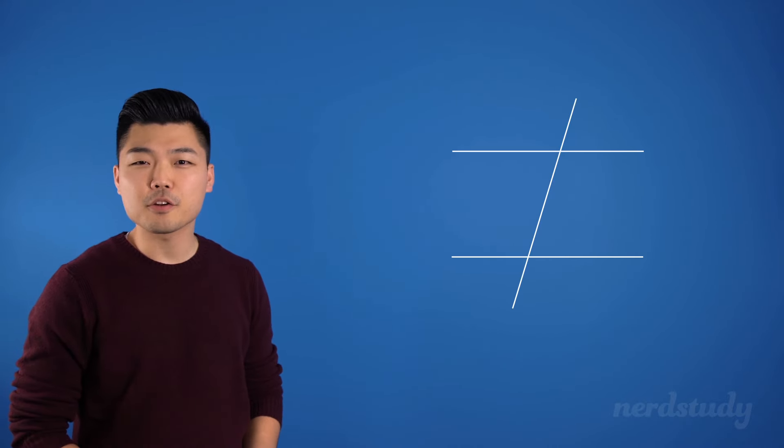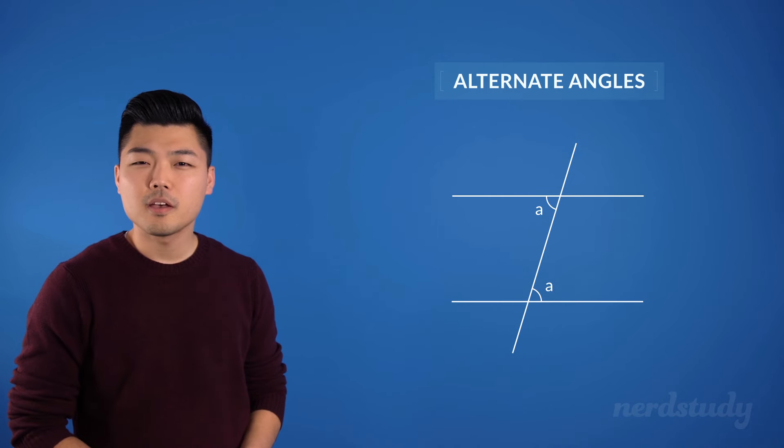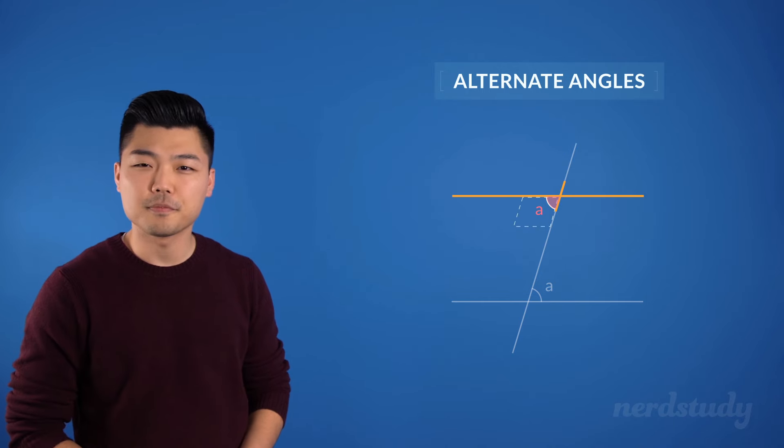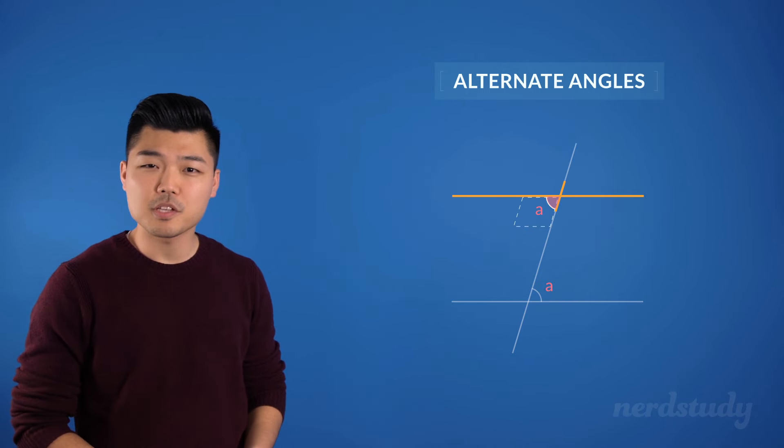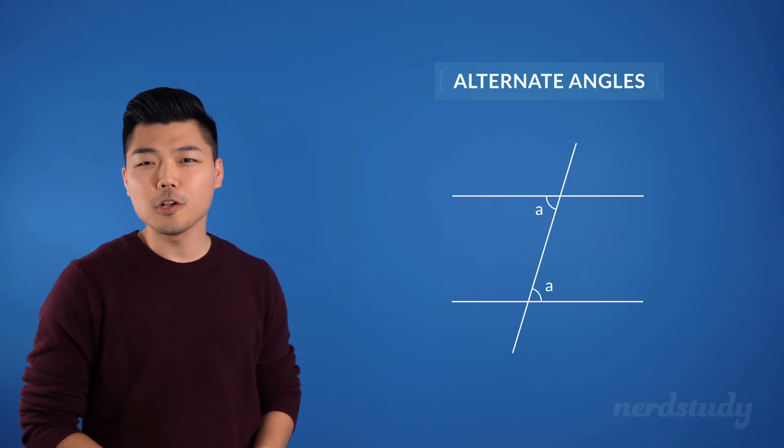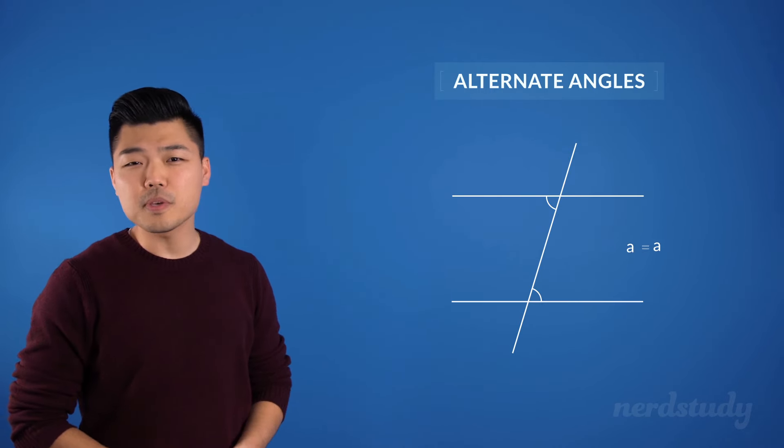Alternate angles are these ones. As you can see, this one is on this intersection's lower left, and this one is on its intersection's upper right. Alternate angles will always be equal to each other.